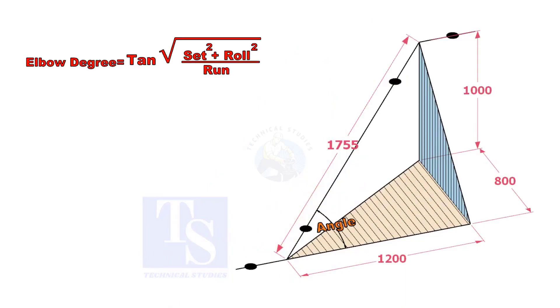The formula is the root of the set squared and the roll squared divided by run, then tan inverse.